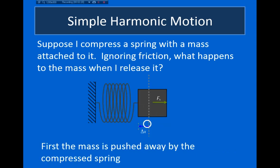As the mass moves to the left, delta x points to the left, so the spring force will have to point to the right. This means that the mass will be accelerating to the right, and eventually the mass will come back to rest. At this point, we've returned back to our starting point, where the mass has compressed the spring and the mass is initially at rest.